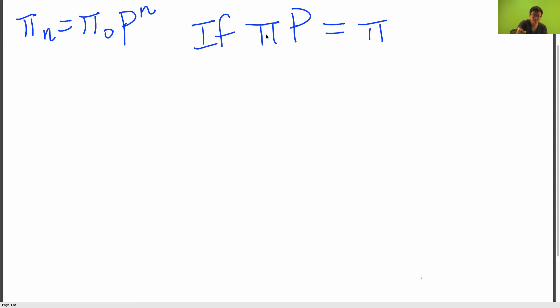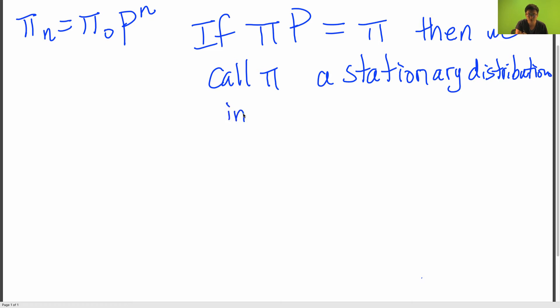And if this is the case, then we call pi a stationary distribution. Or in other words, we call it an invariant distribution.